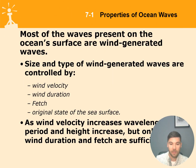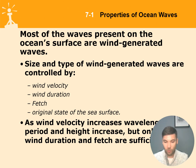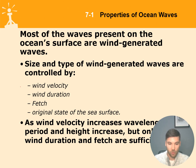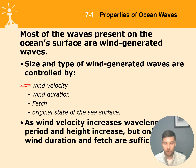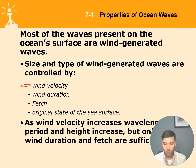Most waves are generated by wind, and the size and period of the wave depend on three factors. First is wind velocity: the stronger the wind, the more energy it transfers — a 70-knot wind transmits much more energy than 10 knots. Second is wind duration: if the wind blows for 24 hours, it has much more time to share energy with the water surface than if it blows for just 15 minutes.